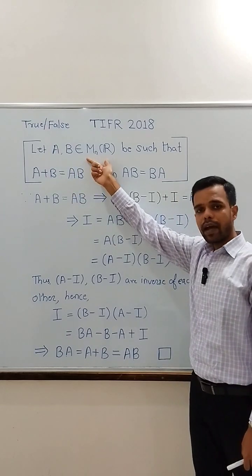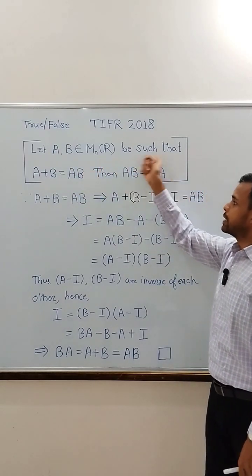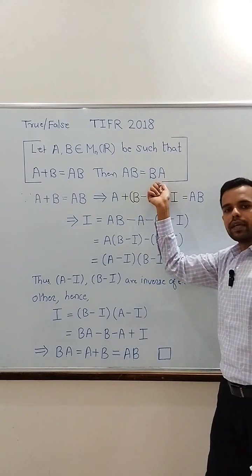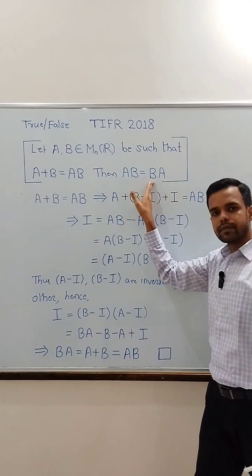We have given that A and B are two n by n matrices over real numbers such that A plus B equals AB. Then AB equals BA, that is A and B commute.